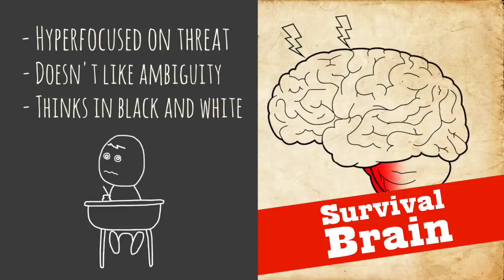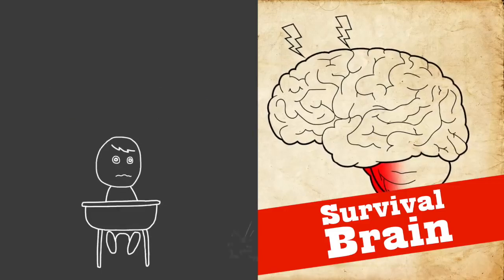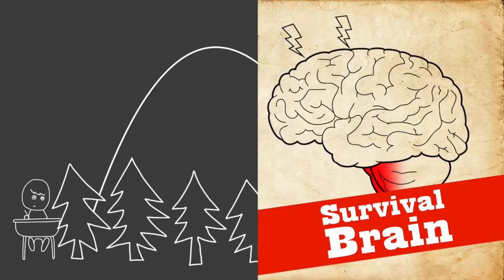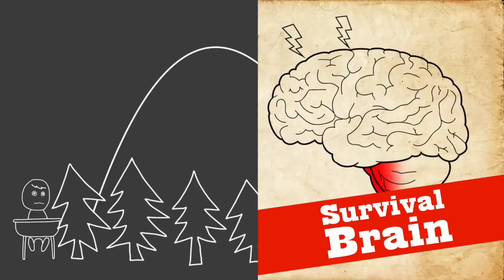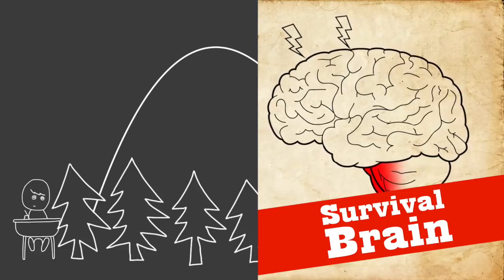And then emotionally, you can imagine that survival brain makes people feel panicky, feel a little obsessive and afraid of getting things wrong. And they don't feel calm and open to learning new things. They just want to get things over with. And people in survival brain also really don't like making mistakes. And they are afraid of looking stupid too.